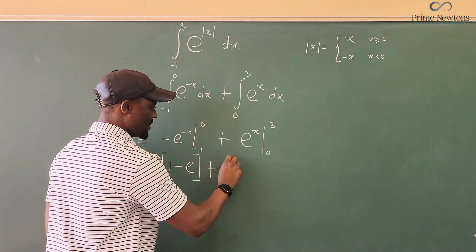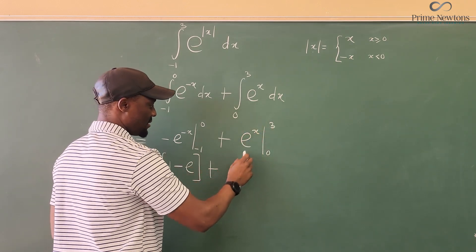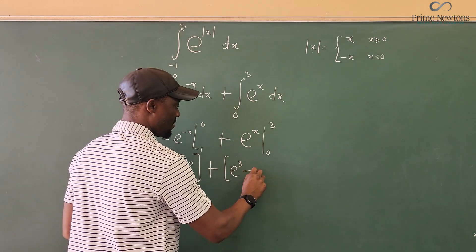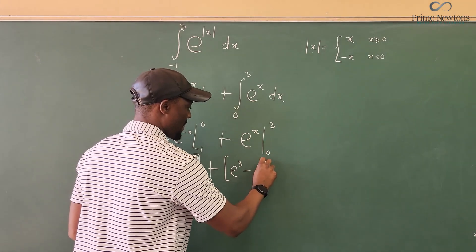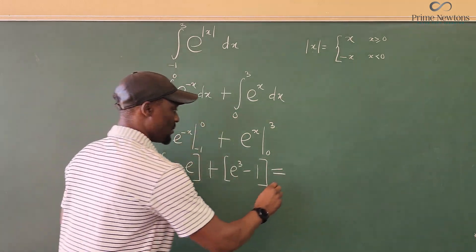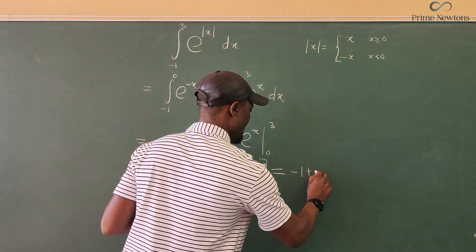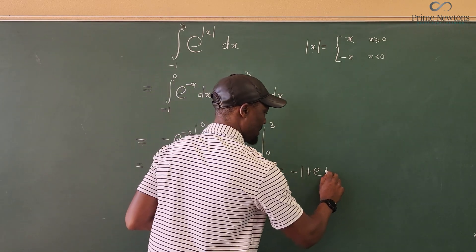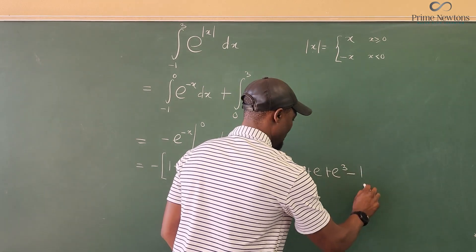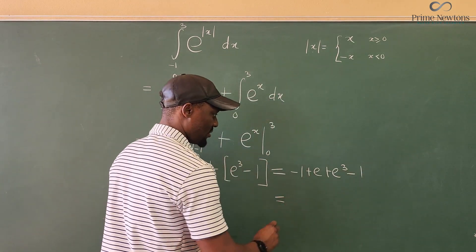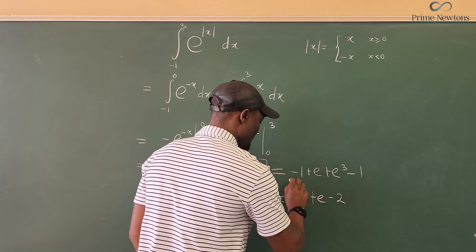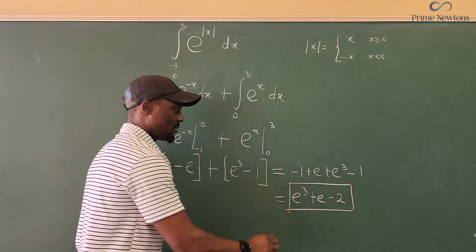Plus we do the same thing. Well, there's no minus here. Plug in three, it's going to be E to the third. Plug in zero, minus one. And if we clean this up, this is going to be minus one plus E plus E cubed minus one. So your answer is E cubed plus E minus two. That's the integral we're supposed to get.